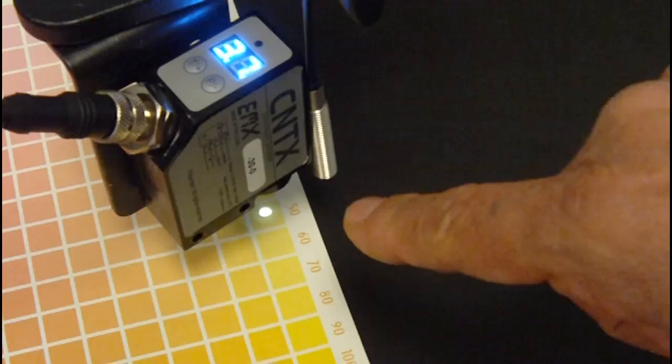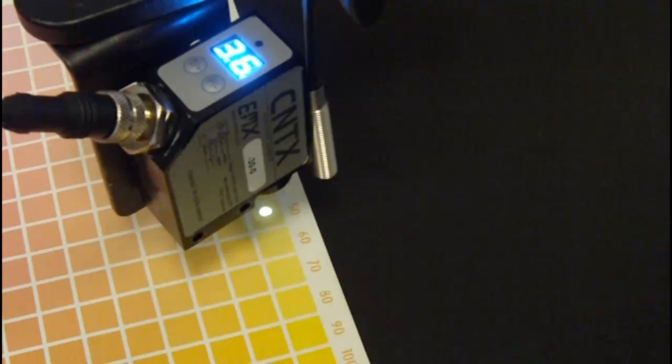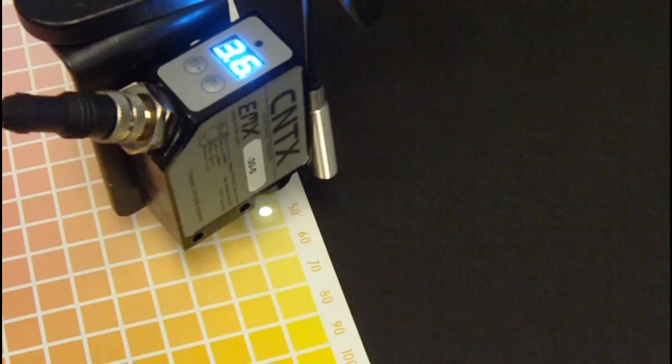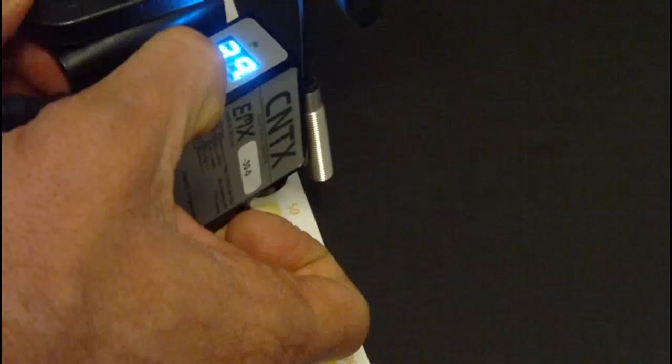Right now I can see that the signal level is around 36 or 37. So, what I'm going to do is adjust the threshold level so that the discrete output will turn on when the signal reaches 36.